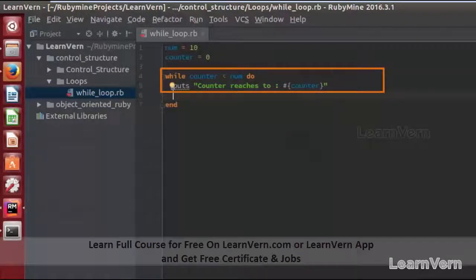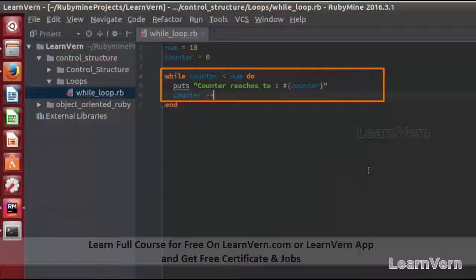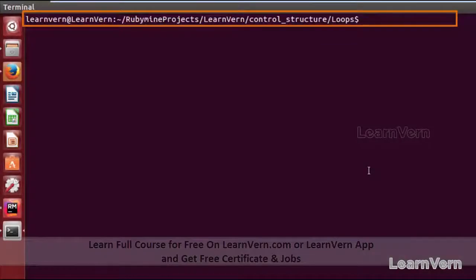And here I am incrementing my counter variable plus equal to 1. So now let's run this code. We need to go to our directory and then ruby.